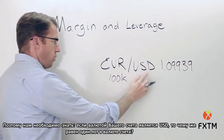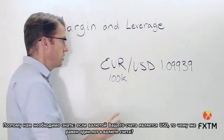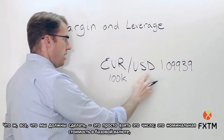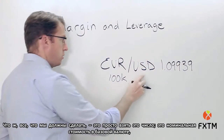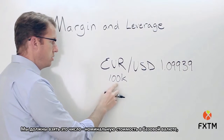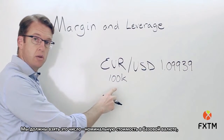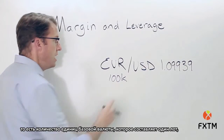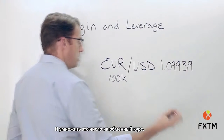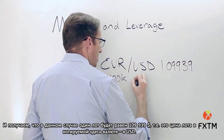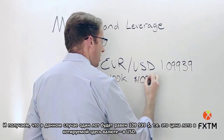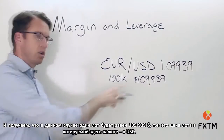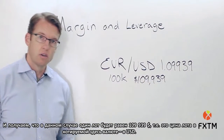What we need to know — if your account is denominated in US dollars — is the notional value of this one-lot position where the dollar is the quote currency. All we have to do is take the notional value in the base currency — how many units of the base currency this lot represents — and multiply that by the exchange rate. In this case, that gives us $109,939 of notional value in US dollars.